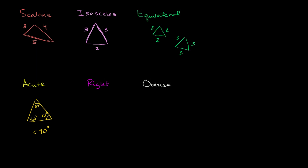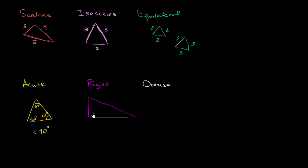A right triangle is a triangle that has one angle that is exactly 90 degrees. This right over here would be a right triangle. The normal way this is indicated, people draw a small square at the angle rather than writing 90 degrees. That little box tells you that angle is exactly 90 degrees. Because this triangle has a 90 degree angle — and it can only have one — this is a right triangle.